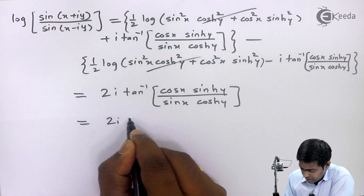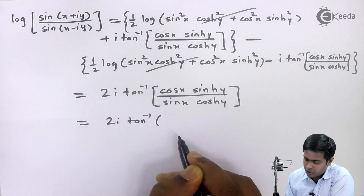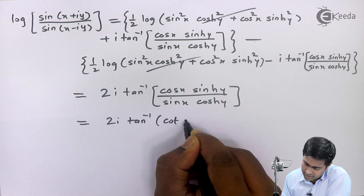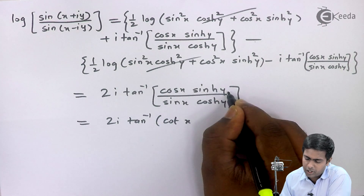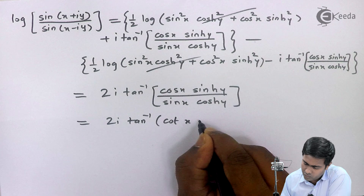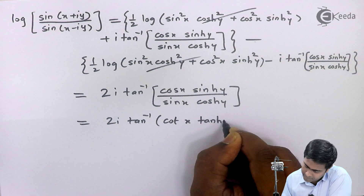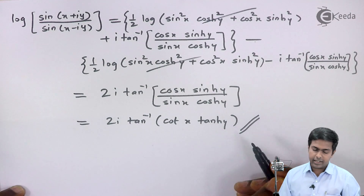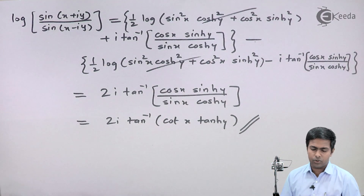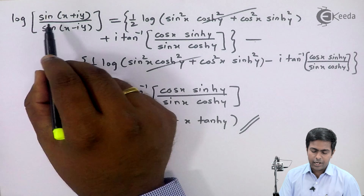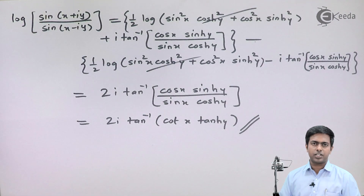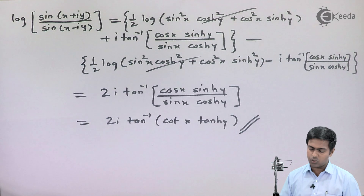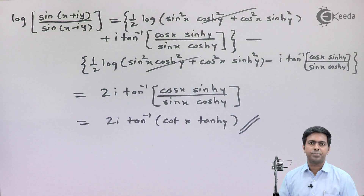We can substitute cos x / sin x = cot x and sinh y / cosh y = tanh y. This gives the required right-hand side. So we have proved that log of sin(x+iy) / sin(x-iy) = 2i tan⁻¹(cot x · tanh y). Thank you.